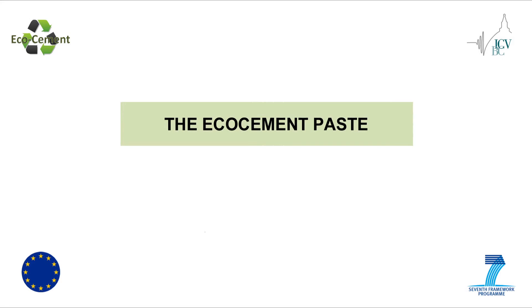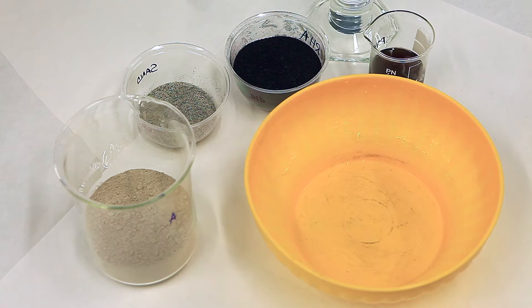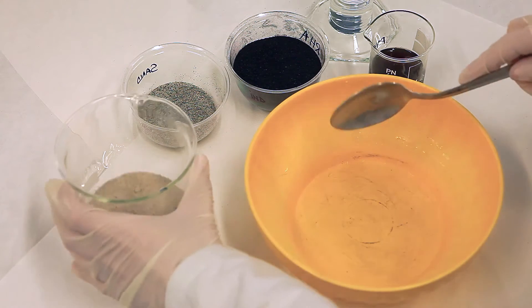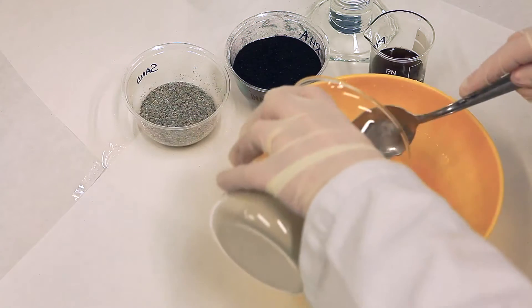Once the bacterial biomass is ready, we can prepare the Eco-cement paste by mixing the different components in the proportions defined by the standard — usually one part binder, three parts sand, one part water. The cement can dust is added first.